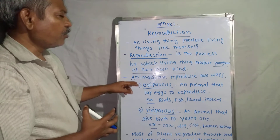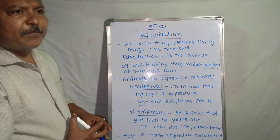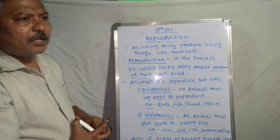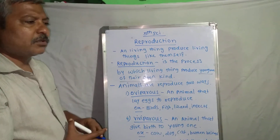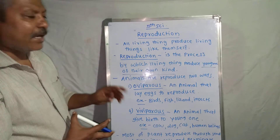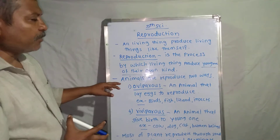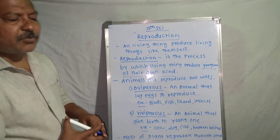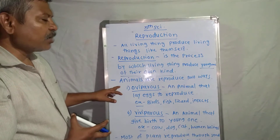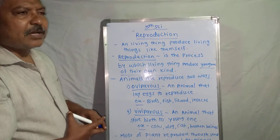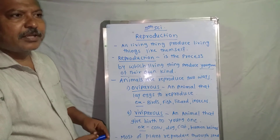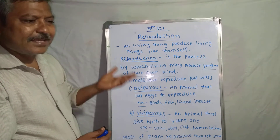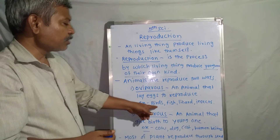Animals reproduce in two ways. The first is oviparous and the second is viviparous. What is meant by oviparous? Animals that reproduce through laying eggs. The definition of oviparous: an animal that lays eggs to reproduce is called oviparous.